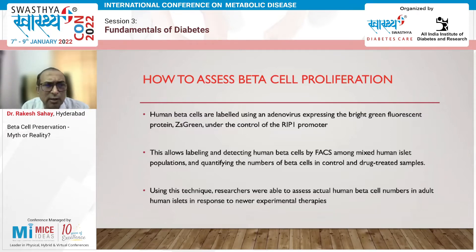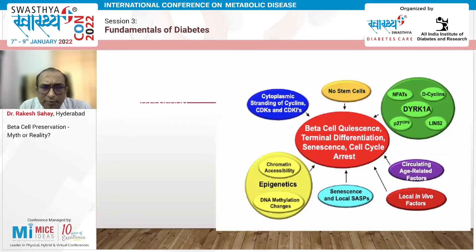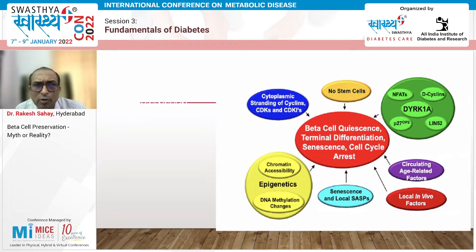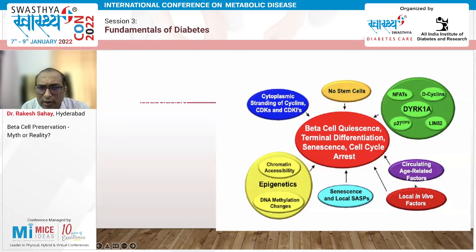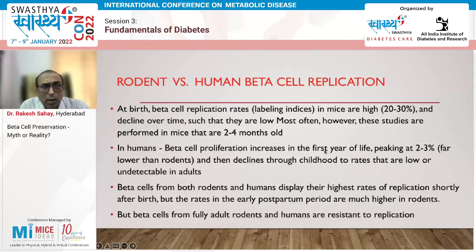Normally, beta cells are quiet — not undergoing proliferation — and are in a state of cell cycle arrest. This can be due to lack of stem cells, cellular senescence, or other suppressive factors. DNA methylation and epigenetic changes affecting chromatin accessibility actually cause beta cells to remain in a quiescent state.